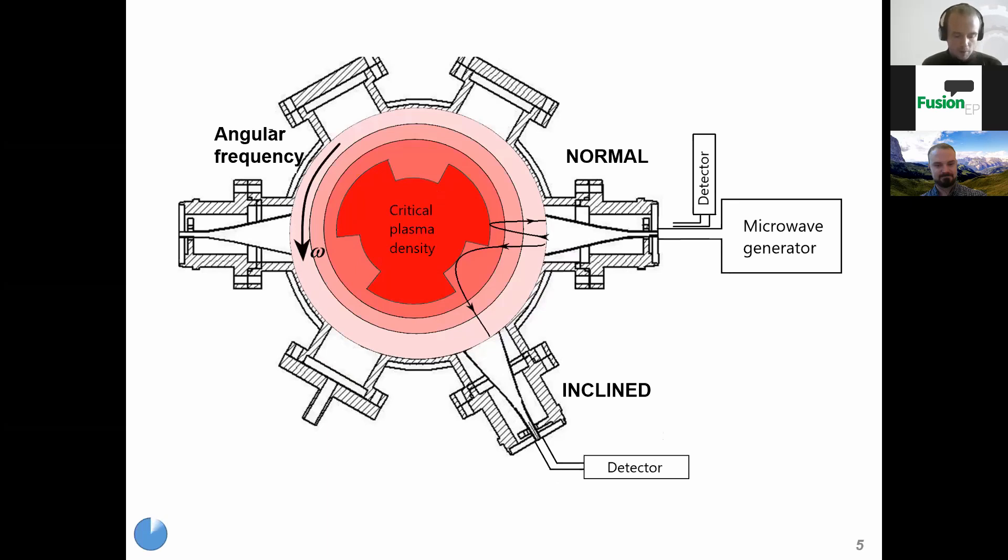Also, the method for determining local inhomogeneities of rotating plasma via microwave refraction is proposed. This method is based on spectral and correlation analysis of the reflected signal from the plasma at normal and inclined probing.